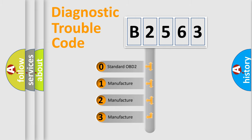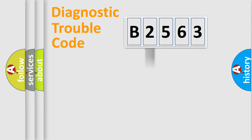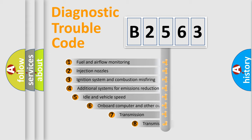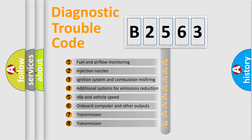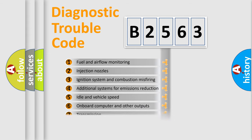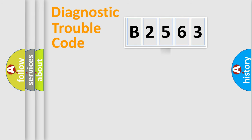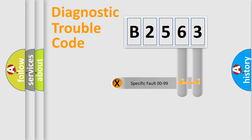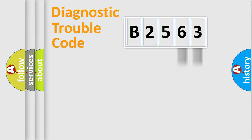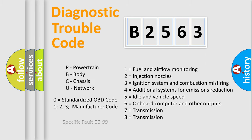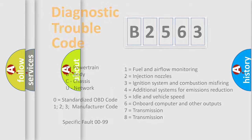If the second character is expressed as zero, it is a standardized error. In the case of numbers 1, 2, or 3, it is a more manufacturer-specific expression of the error. The third character specifies a subset of errors. Only the last two characters define the specific fault of the group — and this division is valid only if the second character is zero.